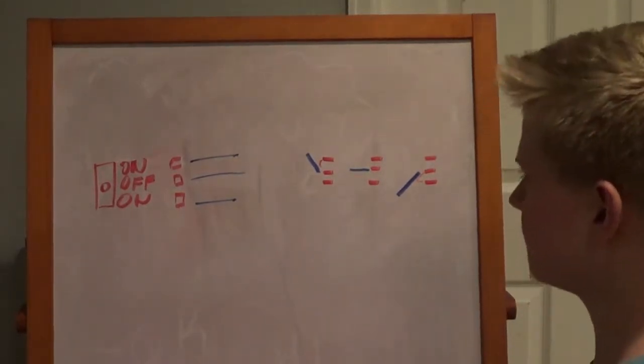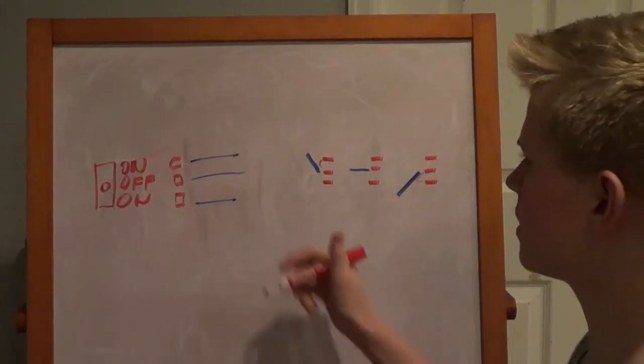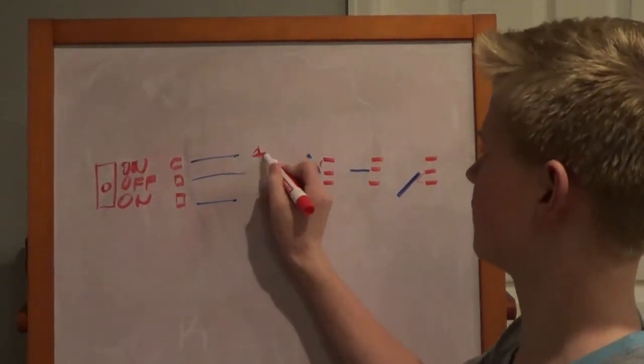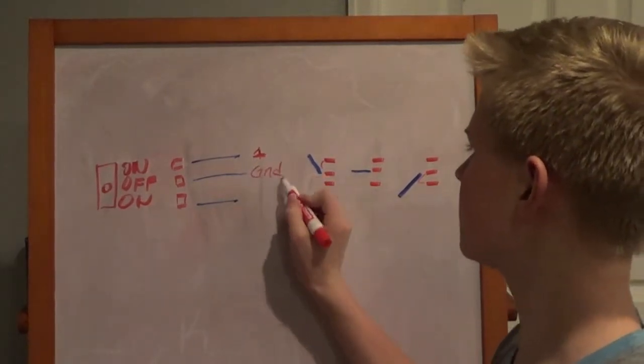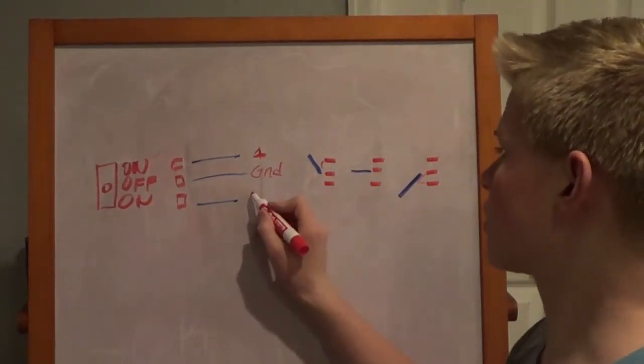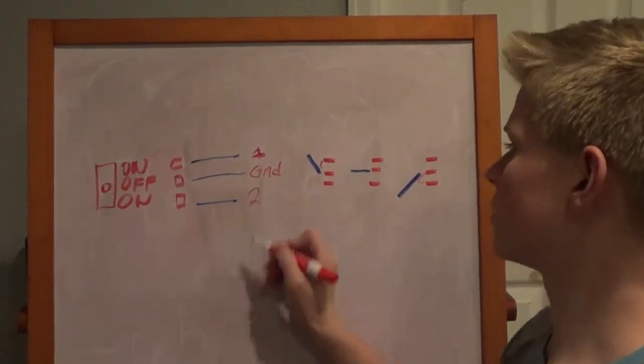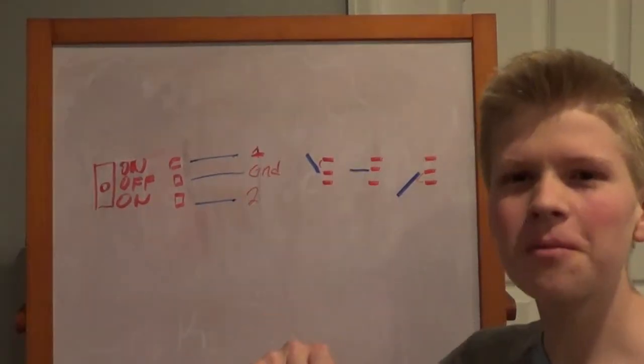So what I would do is have the top one go to your first pin on your Arduino, have the middle one go to ground, and have the bottom one go to pin two. I honestly hope this helped.